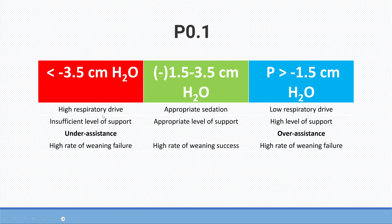Any P0.1 value between minus 1.5 and minus 3.5 cmH2O — meaning a drop in intrathoracic pressure of 1.5 to 3.5 cmH2O — indicates an appropriate level of support, normal respiratory drive, and appropriate sedation for the patient. If you have this value, there is a high rate of weaning success.